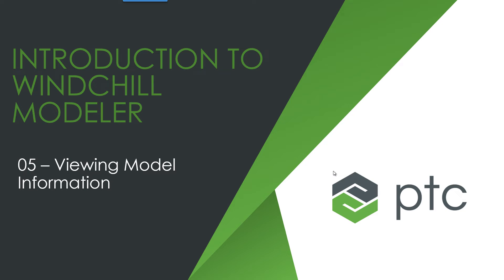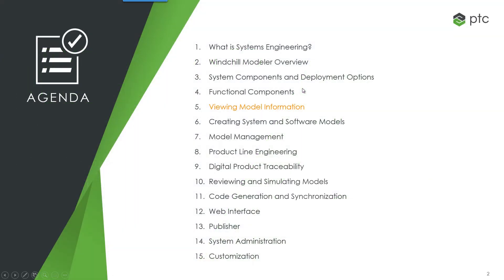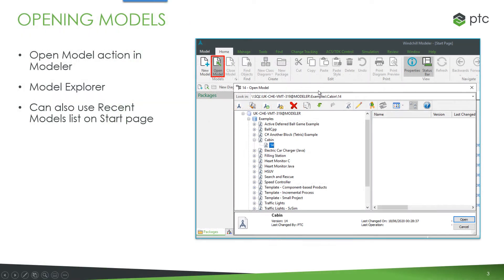Let's look at how we view model information in Windchill Modeler. Opening models can be done directly from inside the Windchill Modeler application, as shown in the screenshots. We also have a dedicated separate app called Model Explorer, which essentially has the same user interface that allows us to view and manage models. You can also open models from the recent models list on the start page inside Modeler.